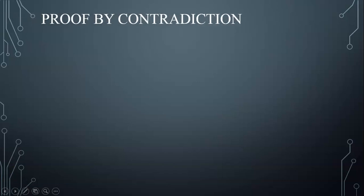A proof by contradiction, also known as reasoning by absurdity, is a type of proof used to prove mathematical conjectures.